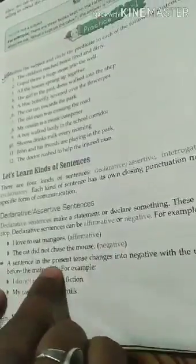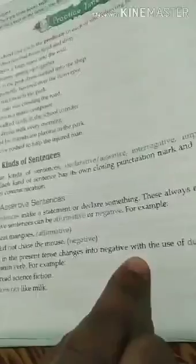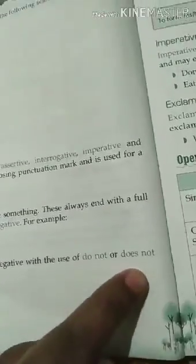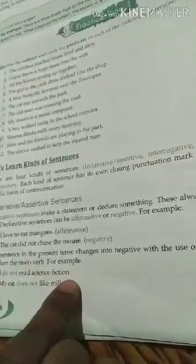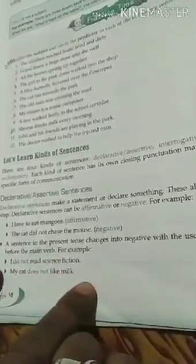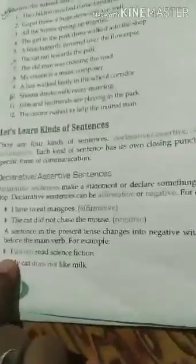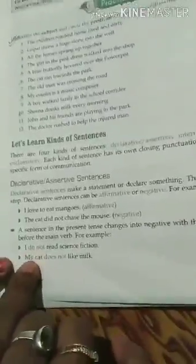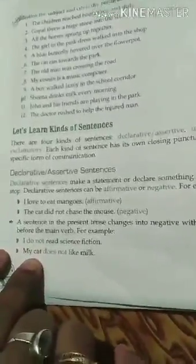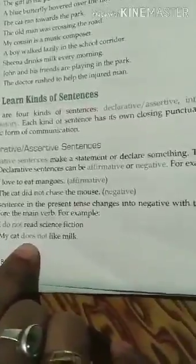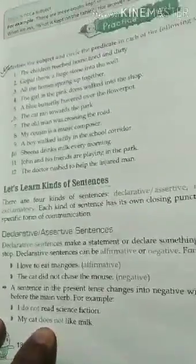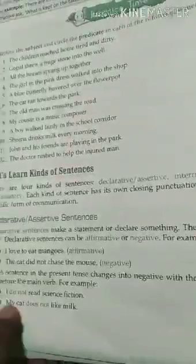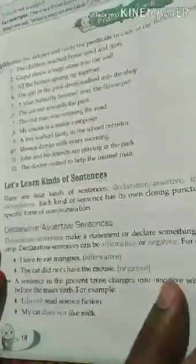A sentence in the present tense changes into negative with the use of 'do not' or 'does not' before the main verb. For example: 'I do not read science fiction' and 'My cat does not like milk.' Here 'I' is first person so 'do' is used, and 'my cat' is third person so 'does' is used. In simple present tense, 'do' or 'does' is used before 'not'.